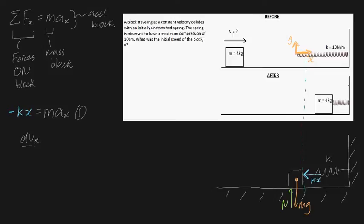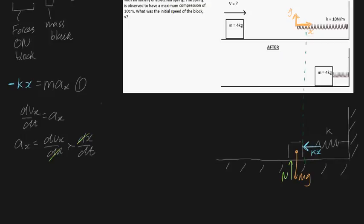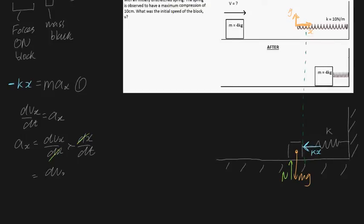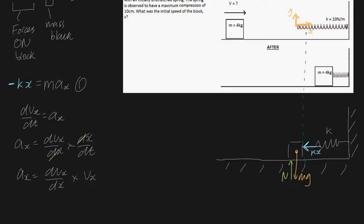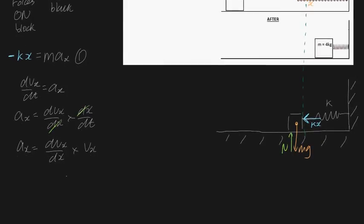We know that dv_x/dt is going to be equal to a_x — the rate of change of velocity equals acceleration. Using the chain rule, a_x equals dv_x/dx times dx/dt. Notice the dx's cancel, so we haven't changed anything. The beauty of this is dx/dt is actually v_x. Then, multiplying by dx and integrating, the integral of a_x dx equals the integral of v_x dv_x.